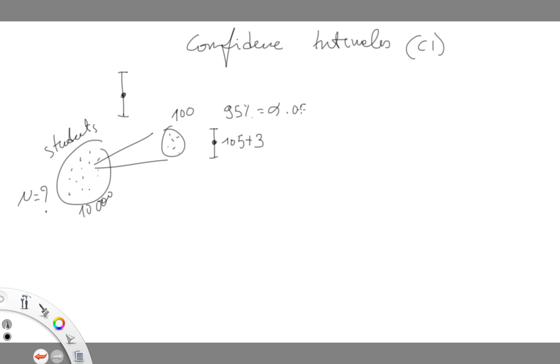What the confidence interval is telling us is that although 105 is our best estimate of all 10,000 students, it is possible that the real IQ level is above 105 by three points or below 105.